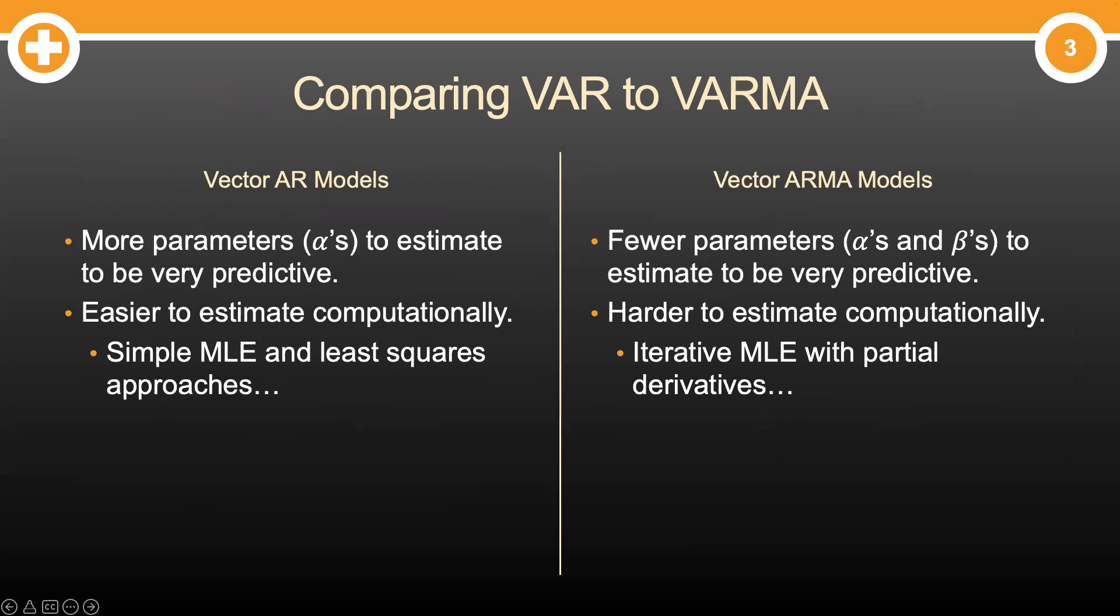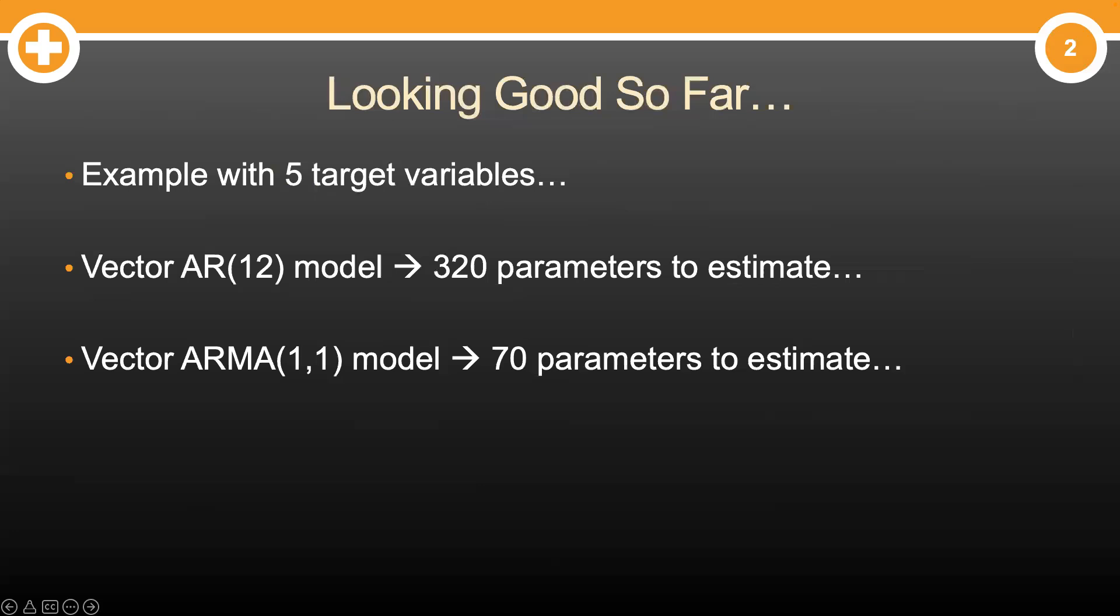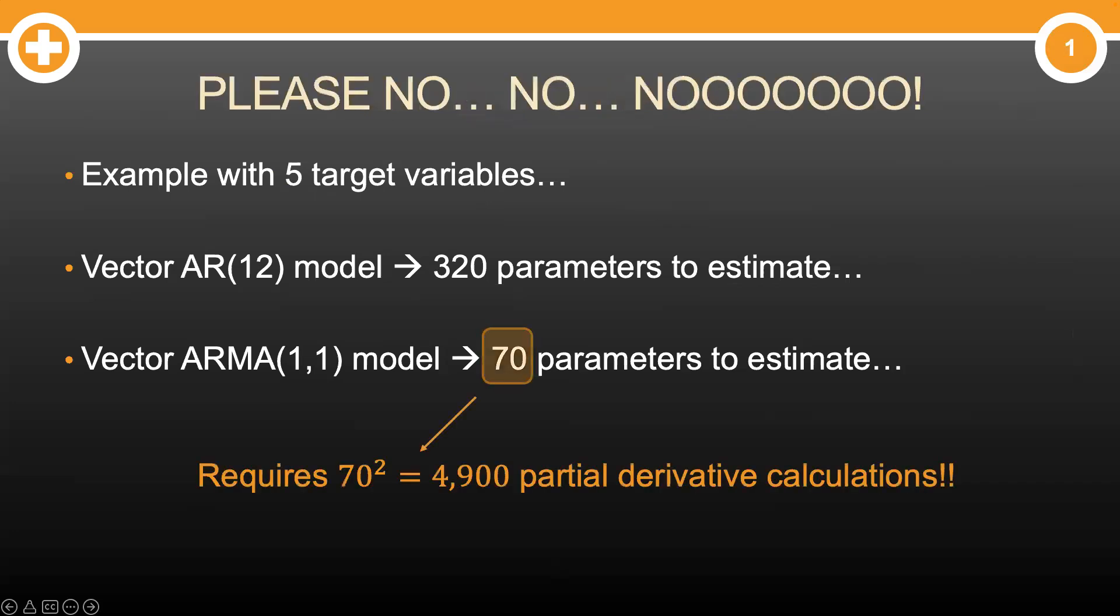However, the biggest difference is in the computation. VAR models use simple maximum likelihood estimation and least squares to estimate all those alphas. VARMA models, on the other hand, are harder to computationally estimate. They use iterative maximum likelihood estimation, which needs partial derivatives. That should hopefully bring back some dark memories of calculus. Let me give you an example. Imagine you have five target variables. For a good model, say a VAR(12) model, it would need to estimate 320 parameters. For a good VARMA model, say a VARMA(1,1), it would only need to estimate 70 parameters. However, those 70 parameters would actually need 4,900 partial derivative calculations to pull off. No thanks. VAR will do just fine for me. You can keep those VARMA models.